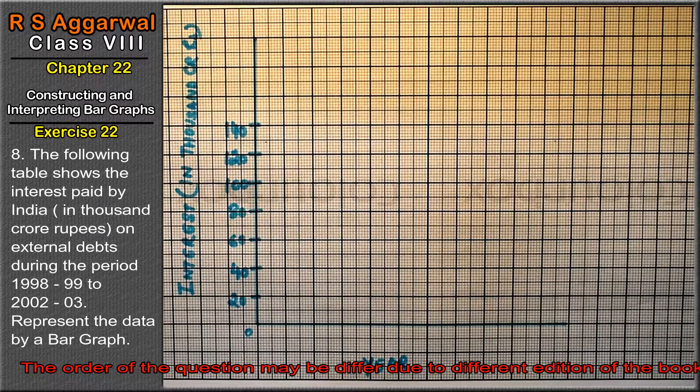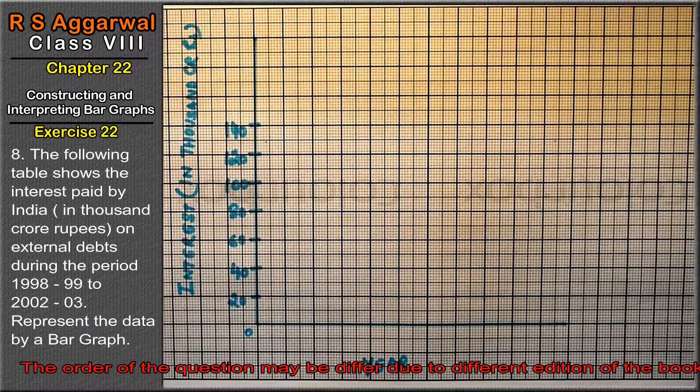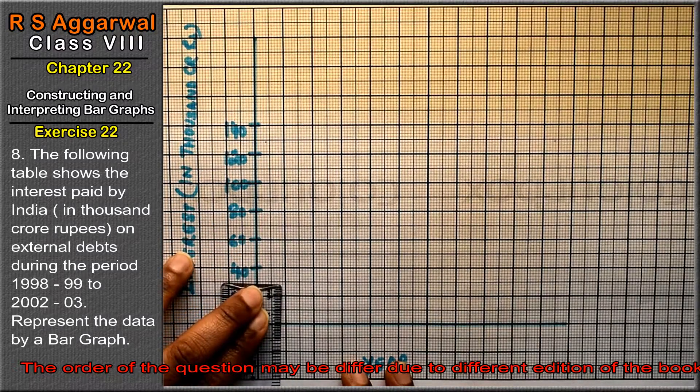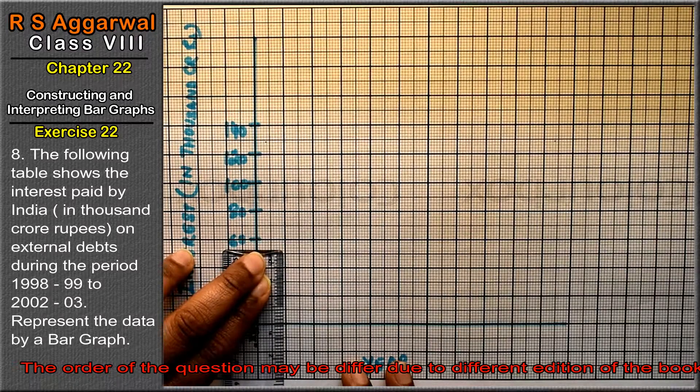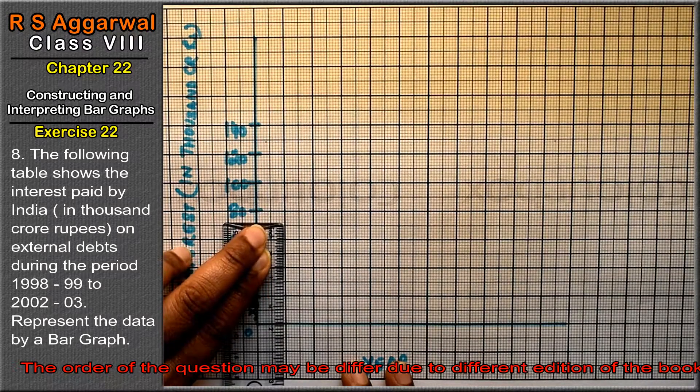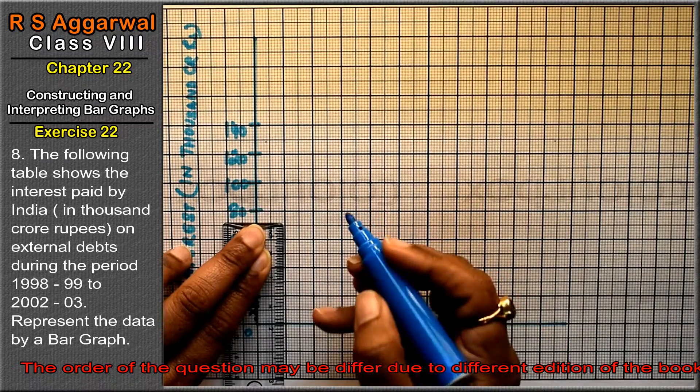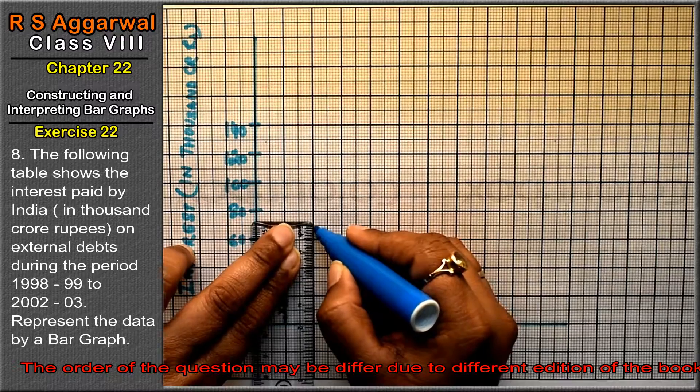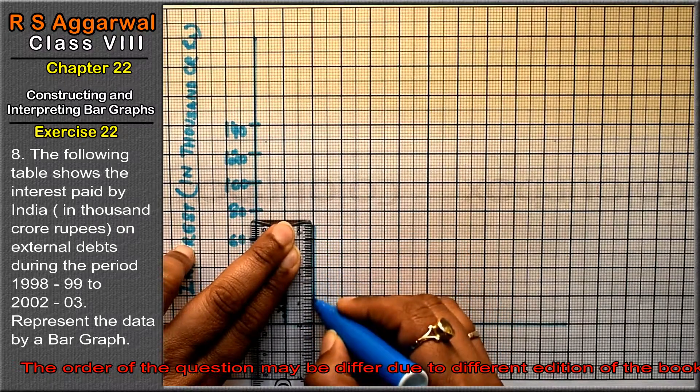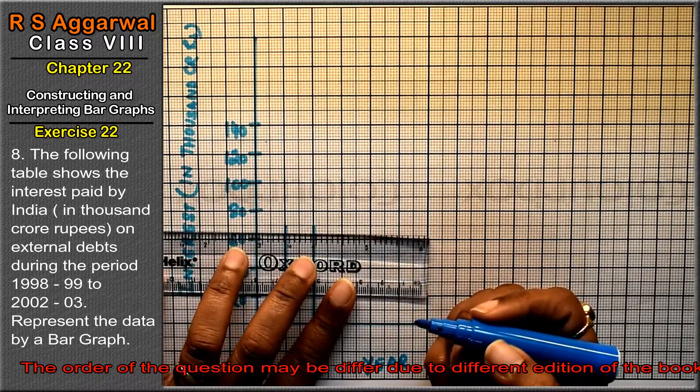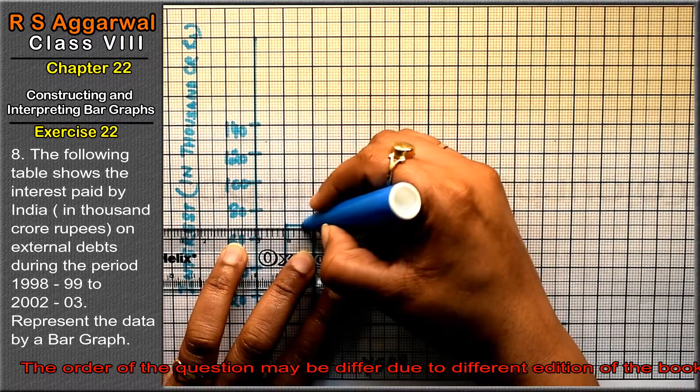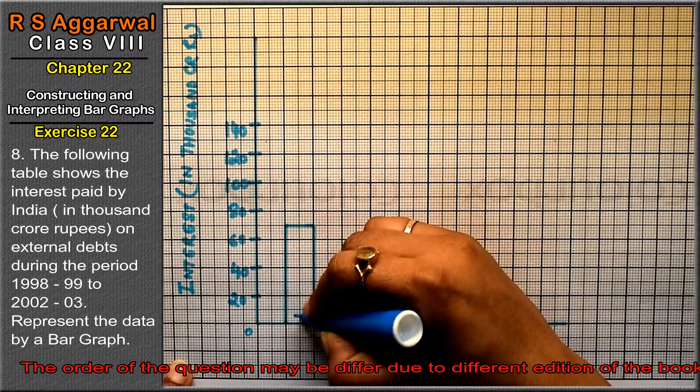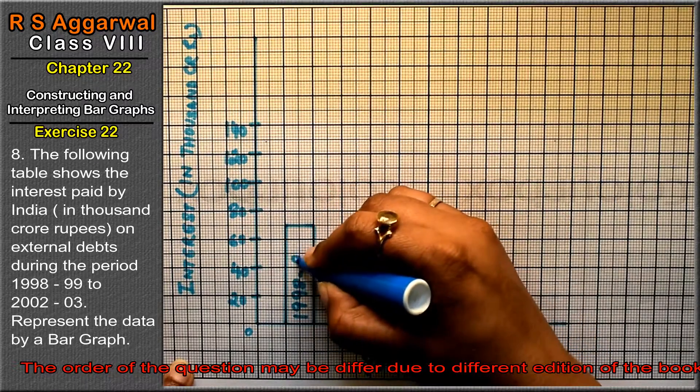Now let's see the first one. From 1998 to 1999 it was 70, so there were 35 divisions. 35 means 30 is here and 5, giving us 35. We will write it from 1998 to 1999.